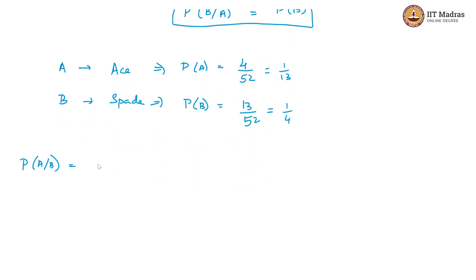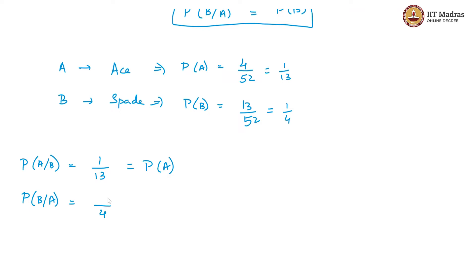What is P of A given B? In this case, we know that the card is already a spade, so there are 13 spades, making the denominator 13. And how many aces are there among these spades? There is only one. So this is 1 by 13, which is equal to P of A. Likewise, P of B given A: if the card is already an ace, there are 4 aces. How many spades are there among these aces? Only 1. So that is 1 by 4, which is equal to P of B.